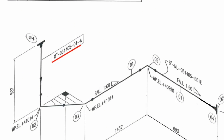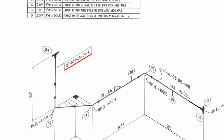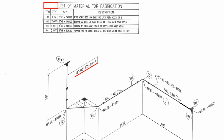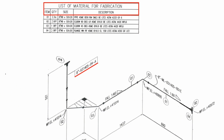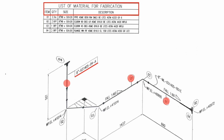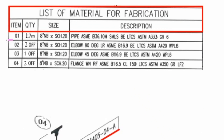This pipeline number is 8-inch-031405-04A. Let's first learn the bill of materials of this pipeline. There is always a table like this in pipe isometric drawings — a list of materials for fabrication showing item numbers, quantities, sizes, and descriptions. Item number 1 is shown in several places of this pipeline drawing. Item number 1: quantity 1.7 meters, size 8-inch, schedule 20 pipe, ASME B36, seamless, low-temperature carbon steel materials, ASTM A333, grade 6.